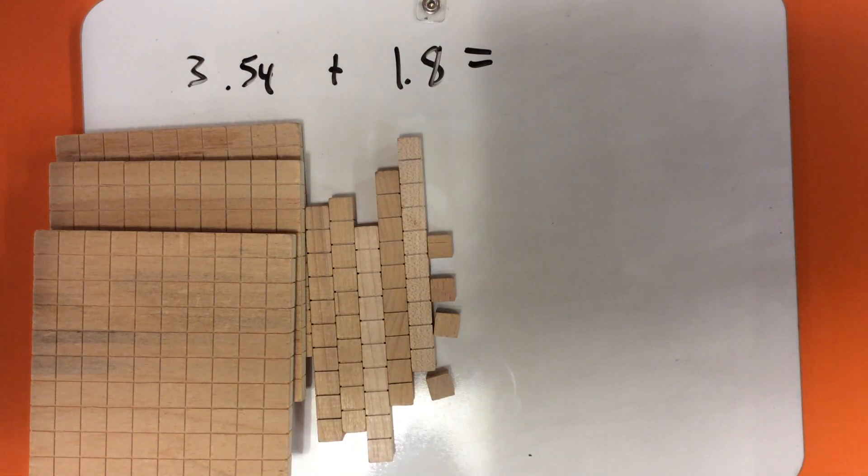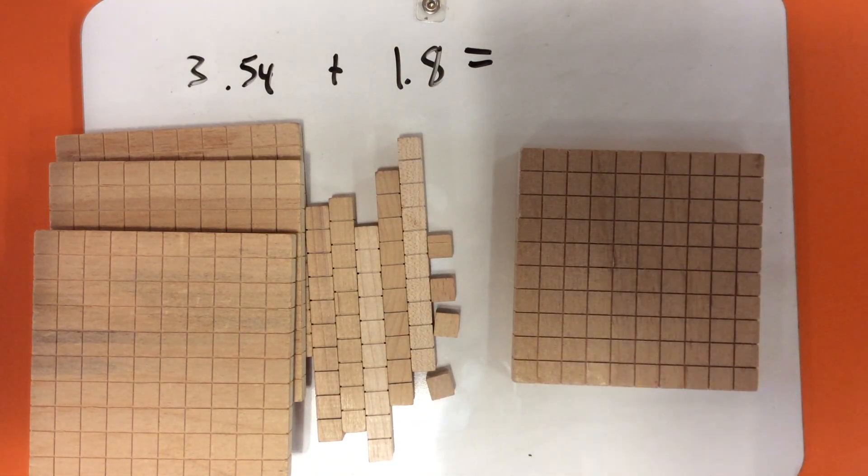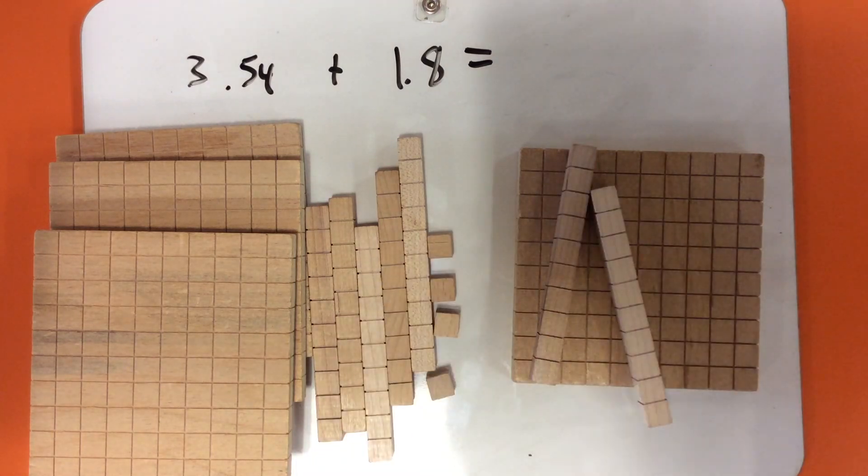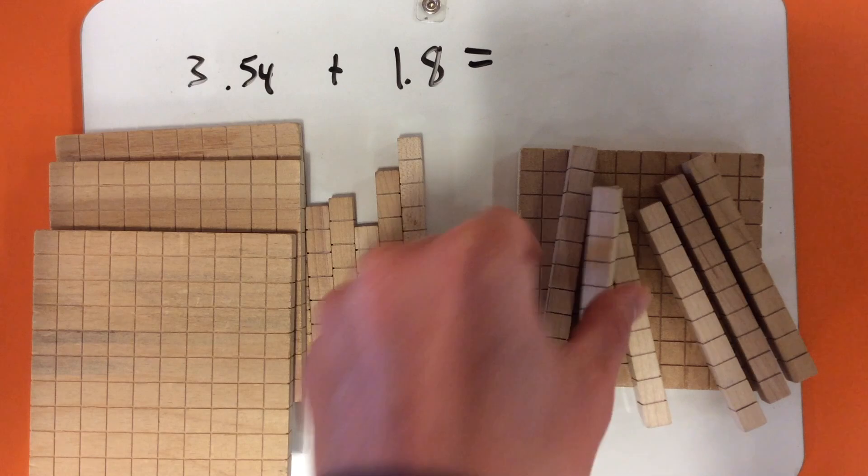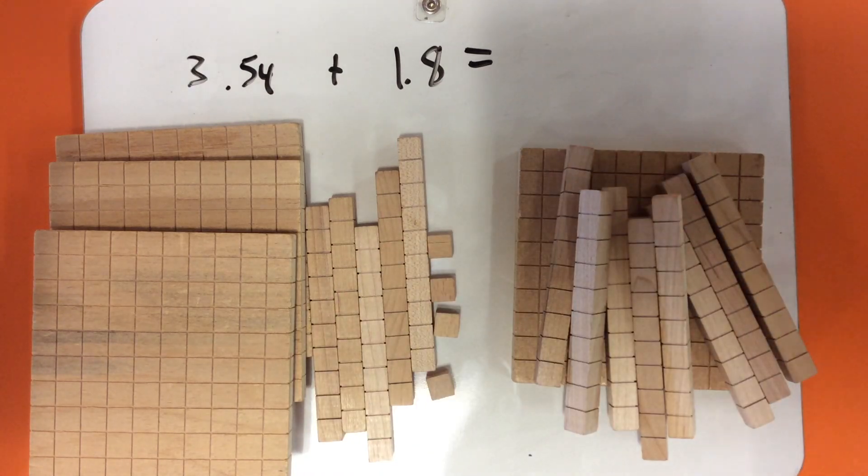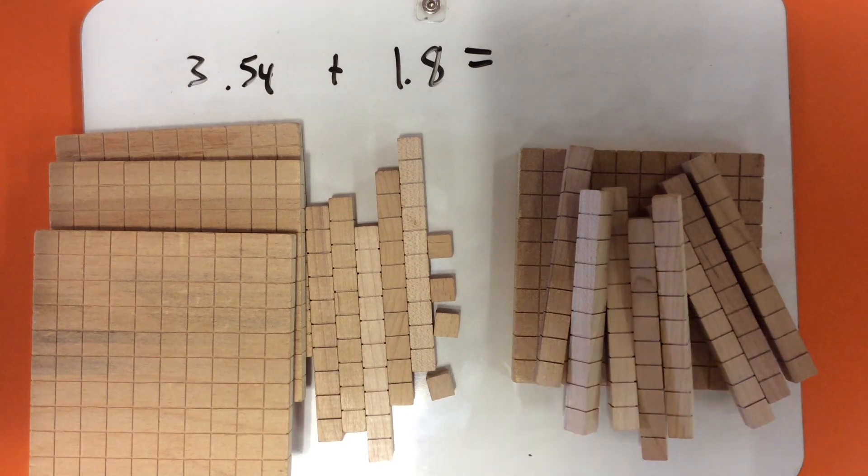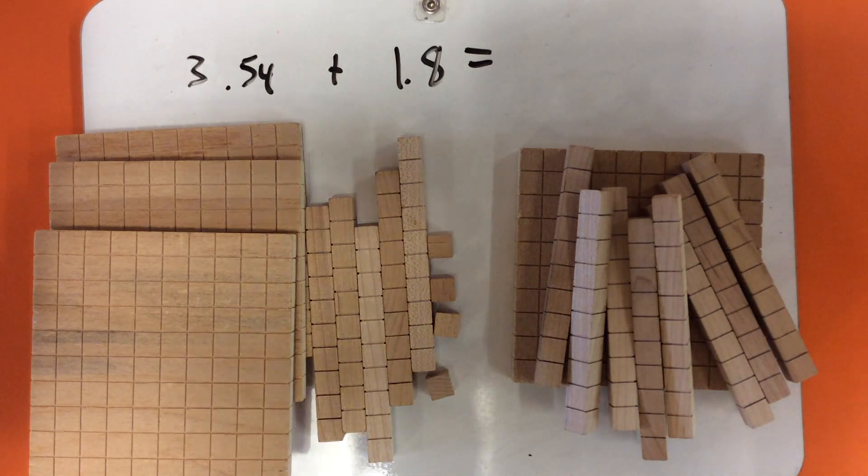And for my 1.8, we've got 1 whole square, and 1, 2, 3, 4, 5, 6, 7, 8 tenths. A little bit hard to see in the small screen, but I guess we can make do.